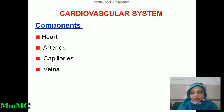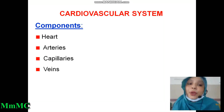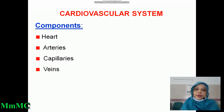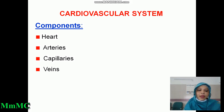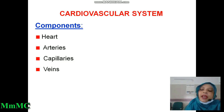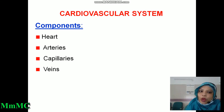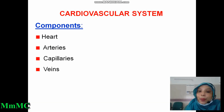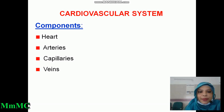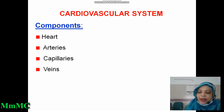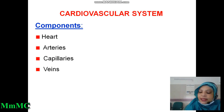First, cardiovascular system — components of cardiovascular system: heart, arteries, capillaries, and veins. This is one of the common viva questions. What are the components of cardiovascular system? Heart, arteries, capillaries, and veins. You have to give this answer.